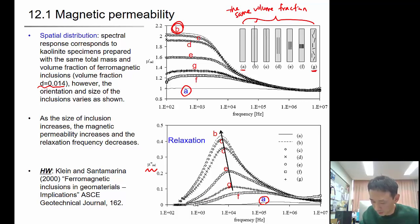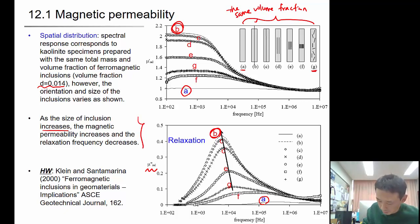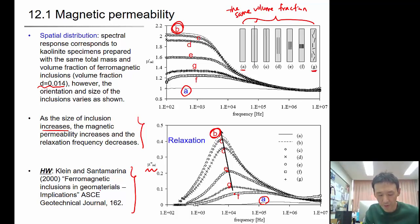Looking at the imaginary magnetic permeability value: at A, the imaginary value is almost zero, so there is no relaxation. As the size of the inclusion increases, the magnetic permeability increases and the relaxation frequency decreases — you can see the peak value slightly shifts to the left side. These data were published in the referenced paper.